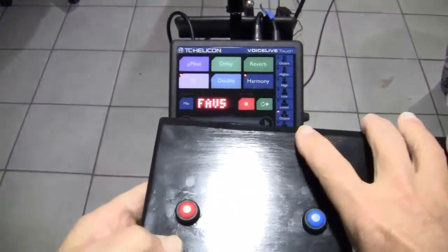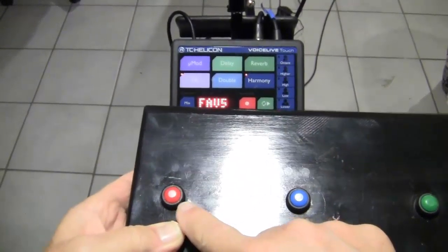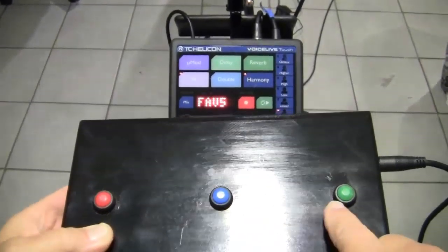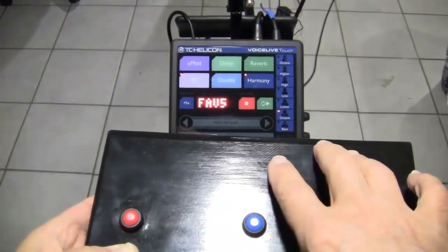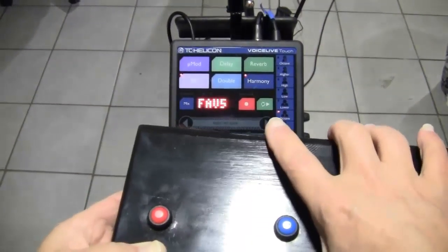Now let's see how this works. The first switch is for harmony, second switch is for favorites, and the third switch is for looping. That's the option I selected. So let's see how it works.